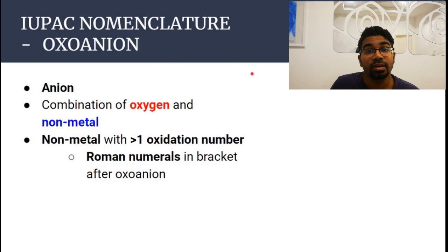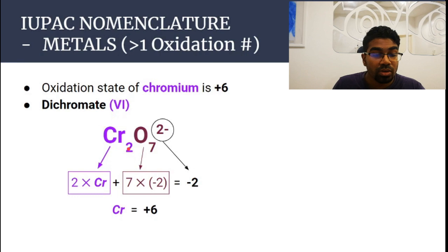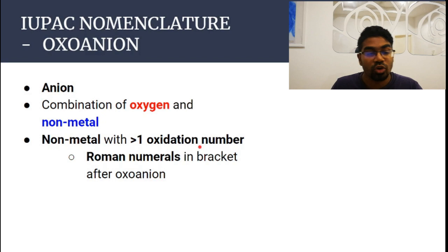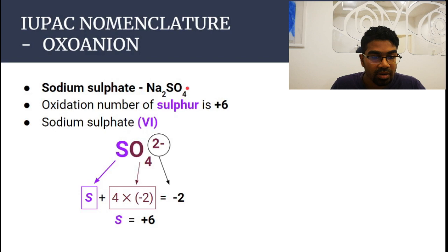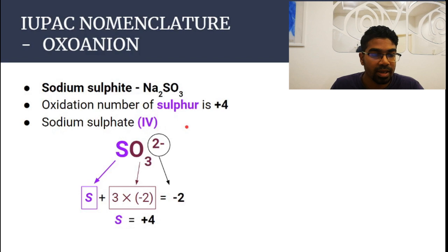Now we move on to oxo anions. Oxo anions are negatively charged particles that have a combination of oxygen and a non-metal — don't confuse these with what we did before, which was oxygen combined with a metal. For oxo anions, if the non-metal has more than one oxidation number, the same principle applies: we use Roman numerals in brackets after the oxo anion. For example, in sodium sulfate, the oxidation number of sulfur in the sulfate oxo anion is plus six, so the IUPAC name is sodium sulfate(VI).